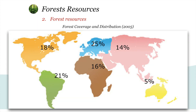The forest distribution is something like this: 25 percent of the forest is available in Europe, then 21 percent in South America, 18 percent in North America, 16 percent in Africa, only 14 percent in Asia, and 5 percent in Australia.